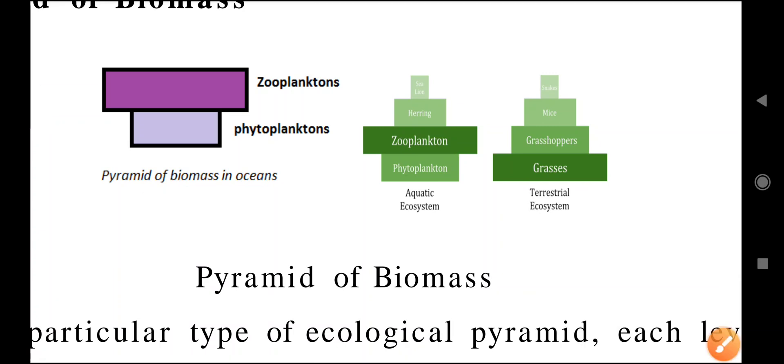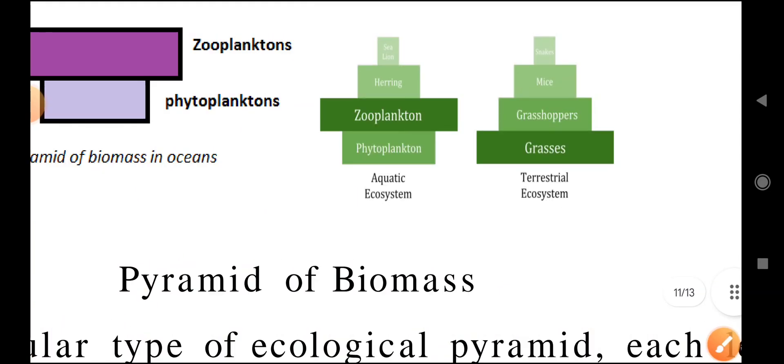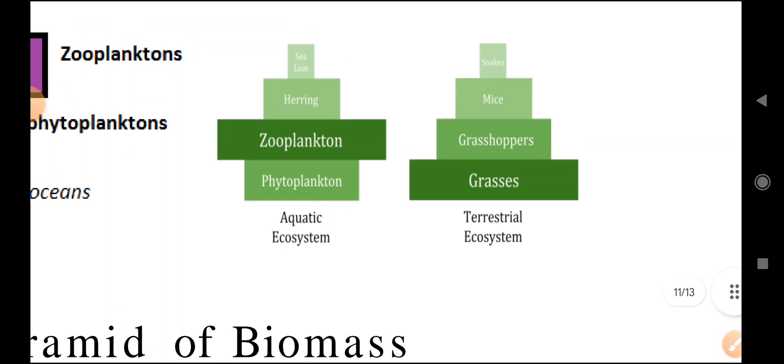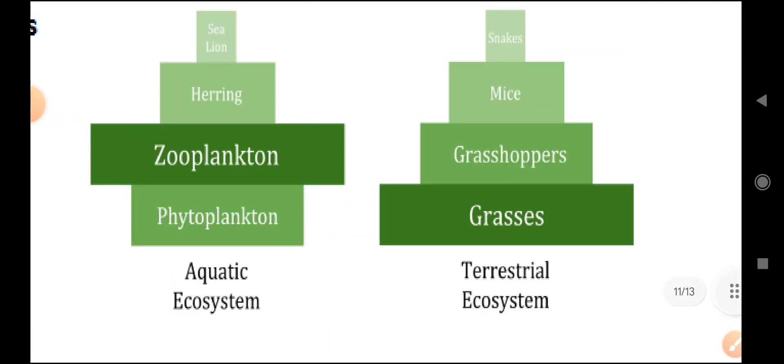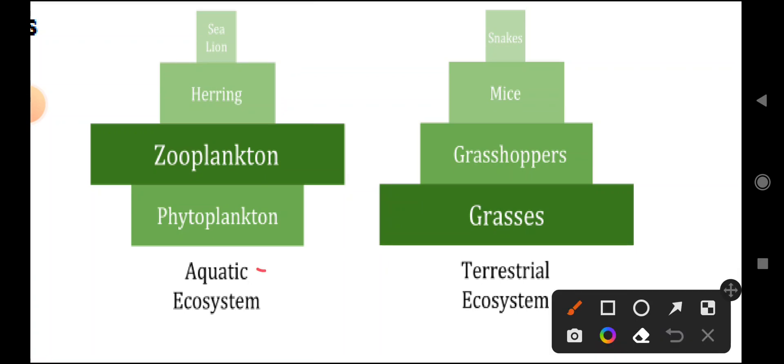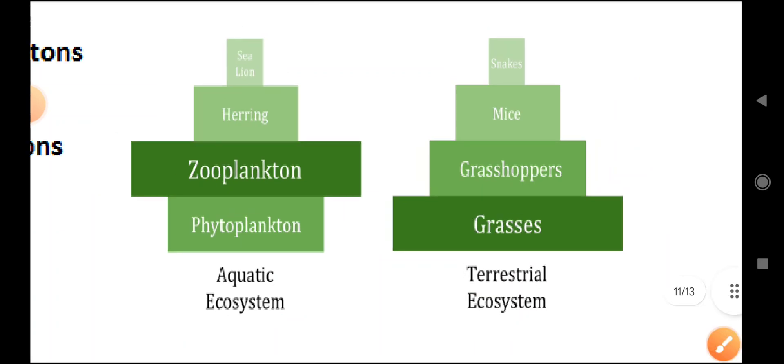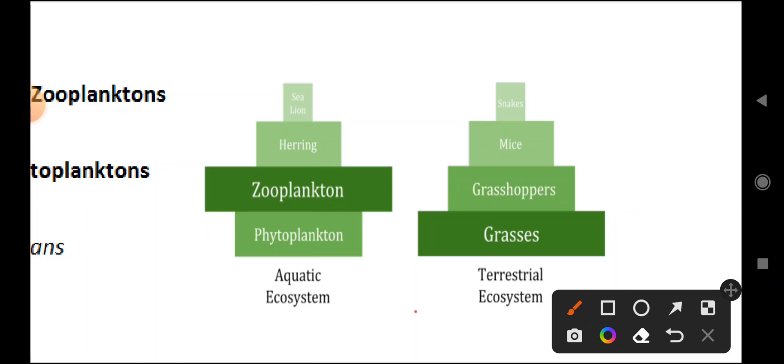Here you can see both terrestrial and aquatic ecosystems. In aquatic systems, there are phytoplankton and zooplankton, then herring. In terrestrial ecosystems, there are grasses, grasshoppers, mice, and snakes arranged in a pyramid shape.